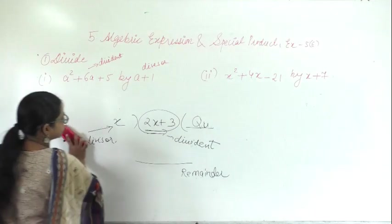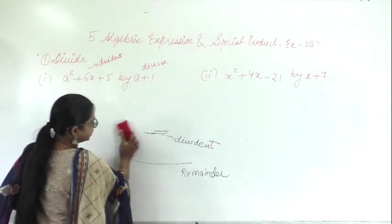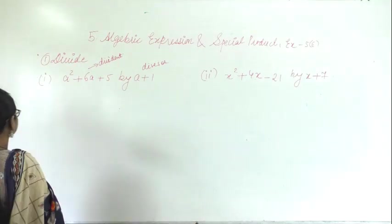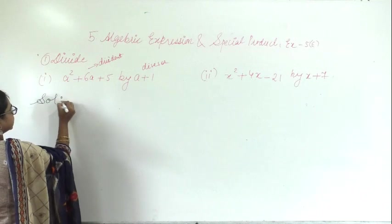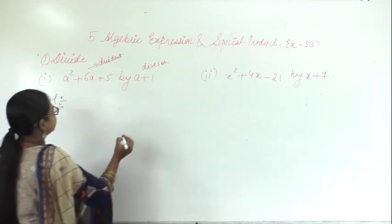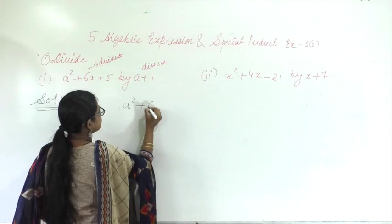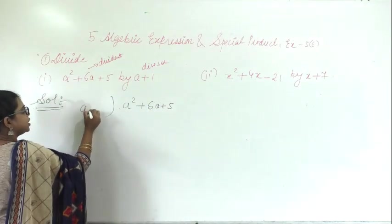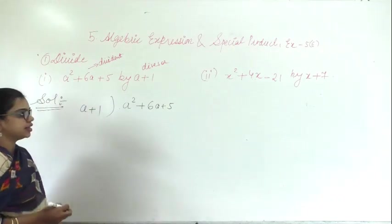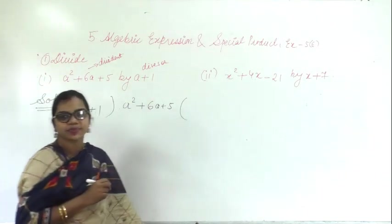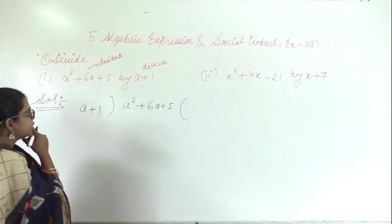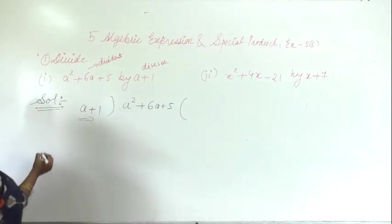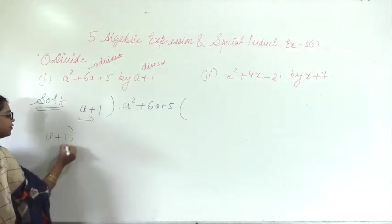So let's start the division method here — this is very important, watch carefully. The divisor is a plus 1. We have to find out the quotient and the remainder. I am writing here a plus 1.